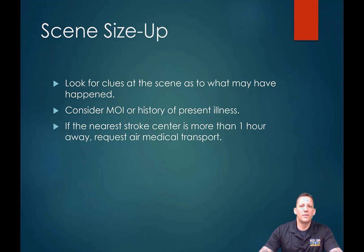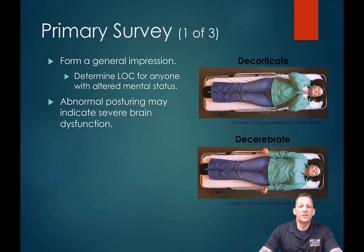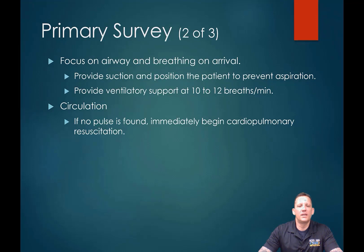This is the decorticate and decerebrate posturing I was speaking about. Decorticate is the lesser level of the two — the natural reflex is to bring extremities into the core to protect organs. Decerebrate posturing is probably the last stage before the patient goes completely unconscious with no reflexes left. When dealing with someone unconscious or obtunded, airway and breathing are your priority, and you really want to make sure that person is not going to aspirate — saliva or vomit — especially in significant head injuries where vomiting tends to happen quite a bit.